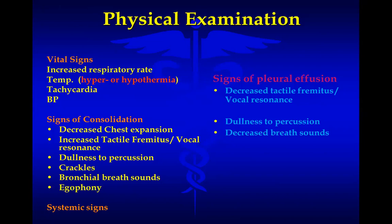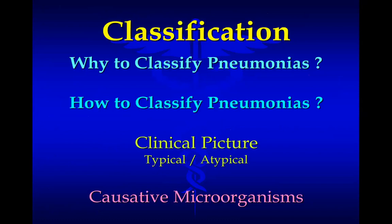If the patient has consolidation, you will elicit signs of consolidation: decreased chest expansion in the overlying area, increased tactile vocal fremitus or vocal resonance, dullness to percussion, crackles, bronchial breathing sounds, and sometimes egophony. If there is no consolidation, you may elicit only a few of these signs. If the patient has pleural effusion, you will find decreased tactile vocal fremitus and vocal resonance, stony dull percussion, and decreased breath sounds.